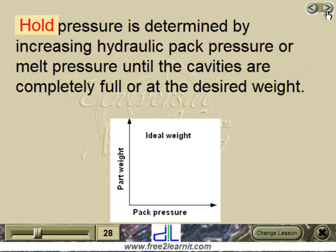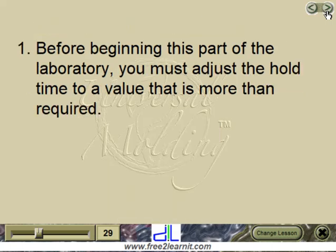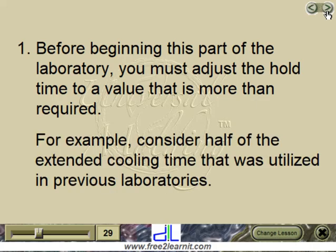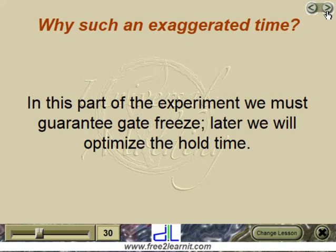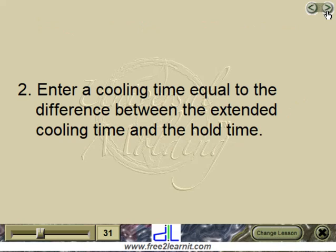Determining Pack Pressure: pack pressure is determined by increasing hydraulic pack pressure or melt pressure until the cavities are completely full or at the desired weight. Step 1: before beginning this part of the laboratory, you must adjust the hold time to a value that is more than required — for example, consider half of the extended cooling time that was utilized in previous laboratories. This guarantees gate freeze; later, we will optimize the hold time. Step 2: enter cooling time equal to the difference between the extended cooling time and the hold time.